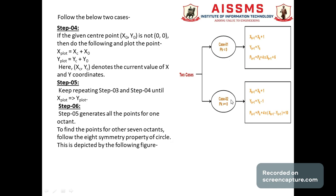These are the two cases for finding the decision parameter. Step 4: if the given center point (x0, y0) is not (0, 0), we plot the following points — x_plot = xc + x0 and y_plot = yc + y0, where xc and yc denote the current values of the x and y coordinates. Step 5: keep repeating steps 3 and 4 until x_plot is greater than or equal to y_plot.